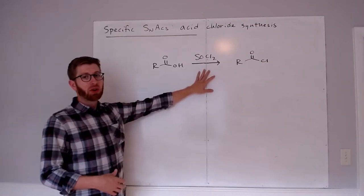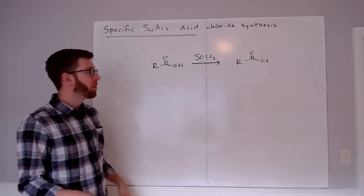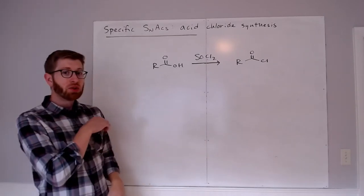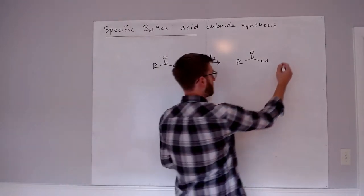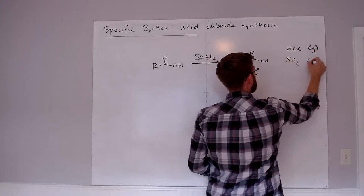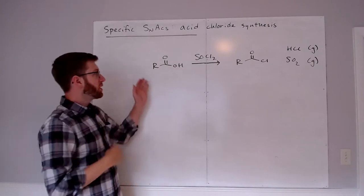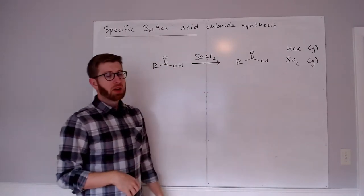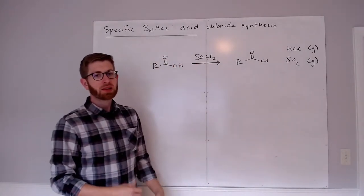We use thionyl chloride, or SOCl2, to get around some of these issues with reversibility and unfavorability of SNAC reactions. In part, that's because this reaction also generates HCl and SO2, both of which are gases. What ends up happening is, even though this reaction may be unfavorable, these two materials will actually leave the reaction flask as the reaction is happening.